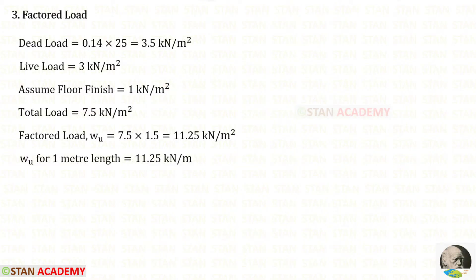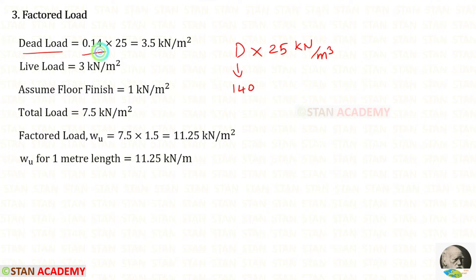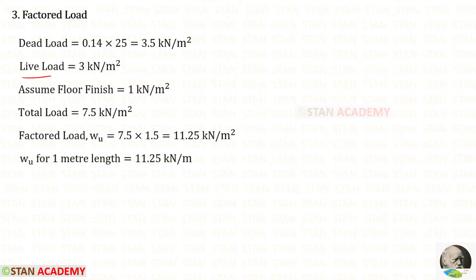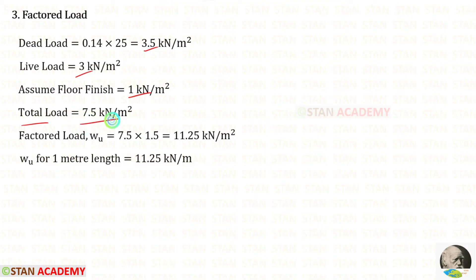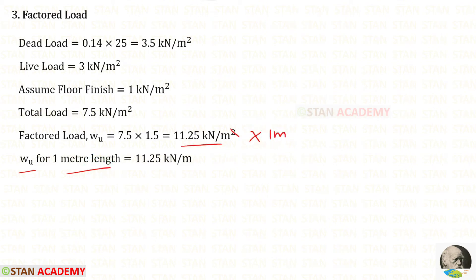Now let us find the factored load. The dead load = overall depth D × unit weight of concrete = 0.14 × 25 = 3.5 kN/m². The live load is 3 kN/m² and we assume floor finish as 1 kN/m². Total load = 3.5 + 3 + 1 = 7.5 kN/m². Factored load = 7.5 × 1.5 = 11.25 kN/m²; for 1 meter length, w = 11.25 kN/m.